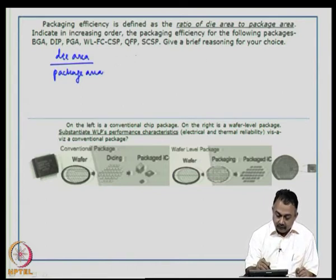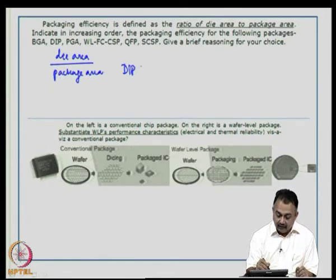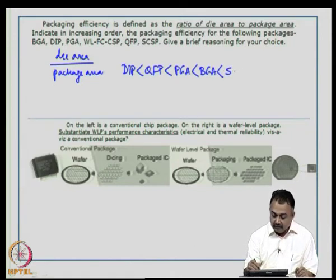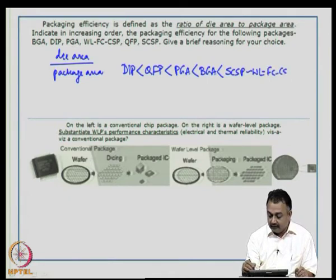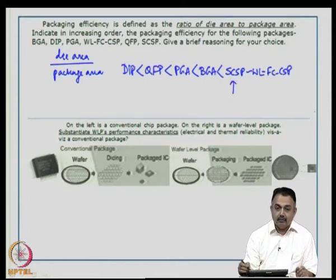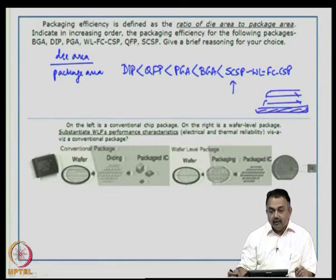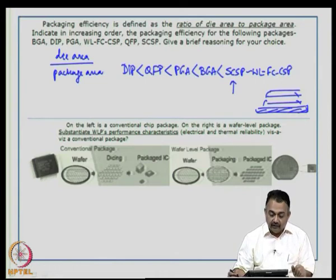DIP has the lowest packaging efficiency. QFP packages have better efficiency but less than PGA, which is less than BGA. The stacked chip size package is near or equal to wafer-level flip chip CSP. A stacked chip size package likely has the highest packaging efficiency because multiple dies are packaged onto a common substrate.